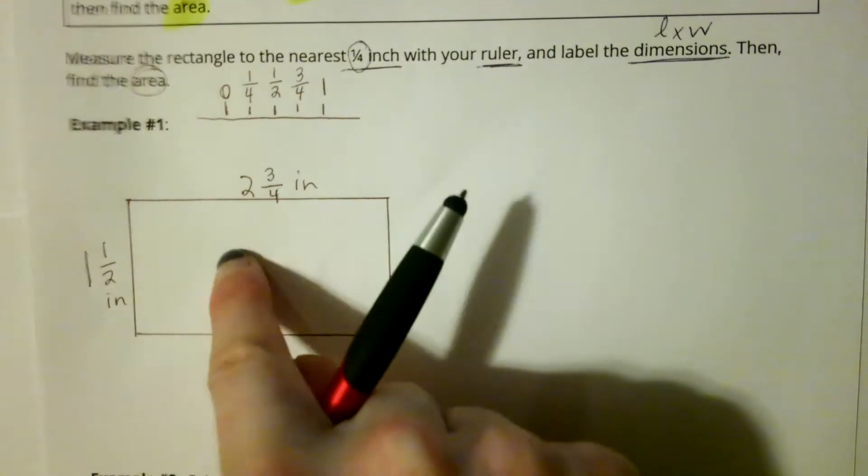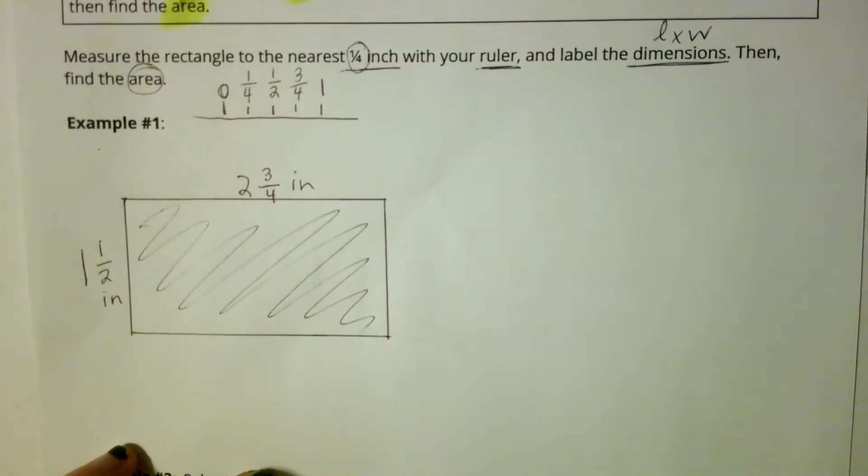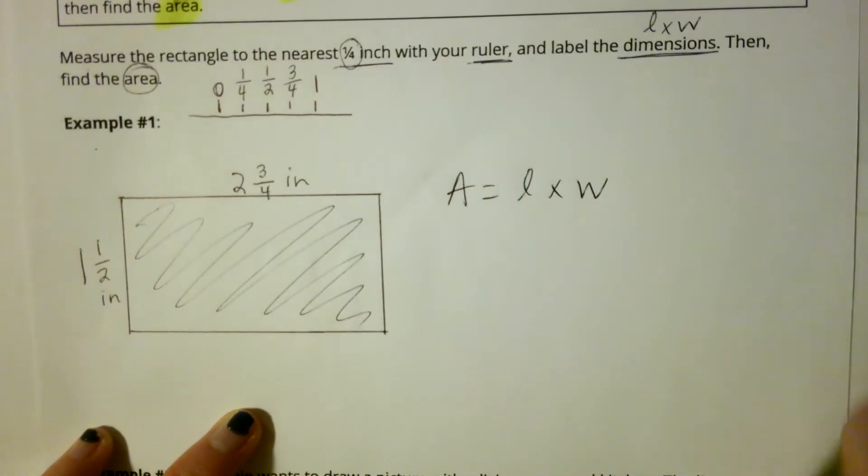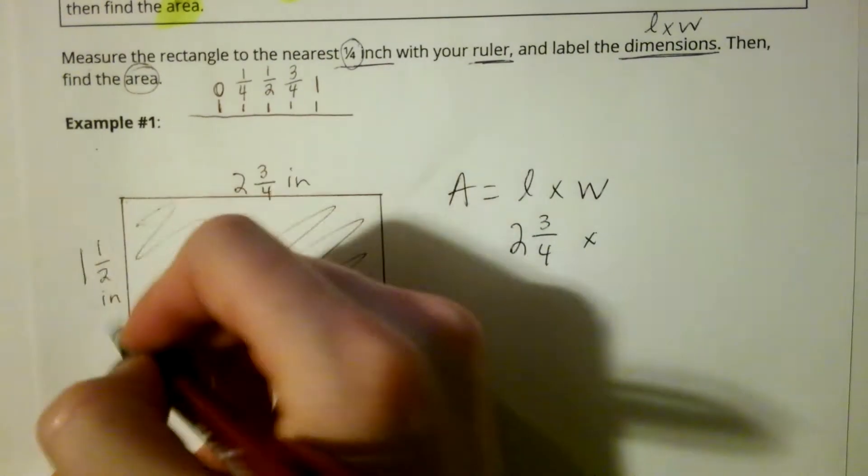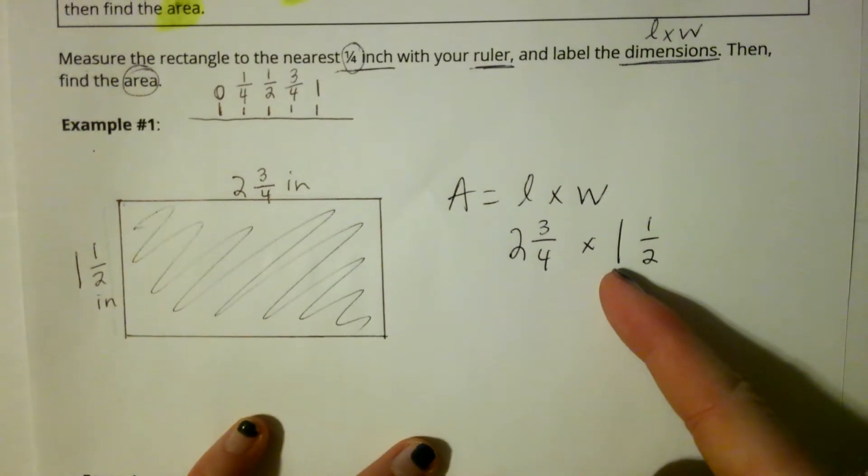Now I'm going to find the area of this rectangle. So I want to find how much space it's taking up. I remember area is length times width. So I'm going to take my length, which is two and three-fourths, and my width, which is one and a half. This is exactly what we've been doing the past two days.